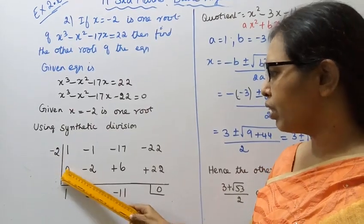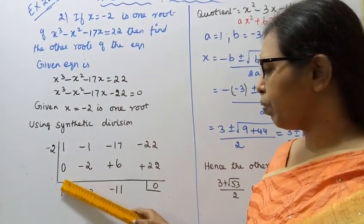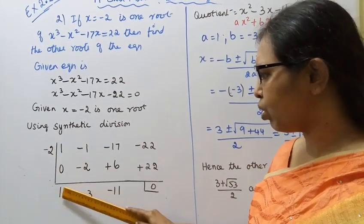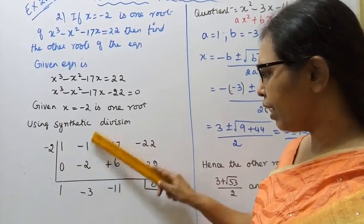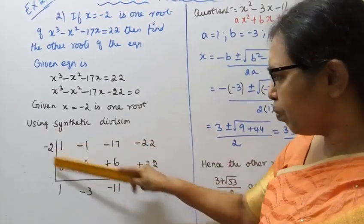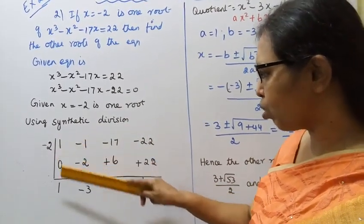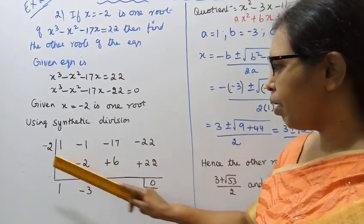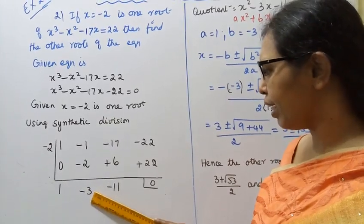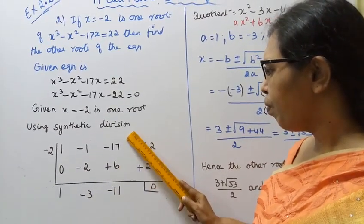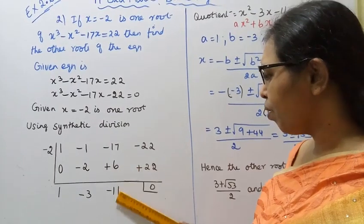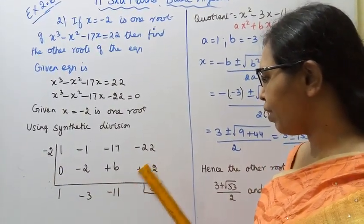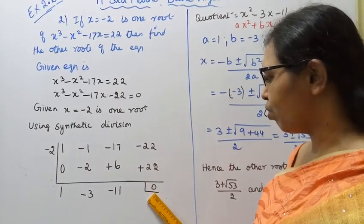minus 2. minus 2 into 1 is minus 2. Continuing the synthetic division: minus 2 into 1 gives minus 2, and minus 2 is equal to 1. The final remainder is 0.